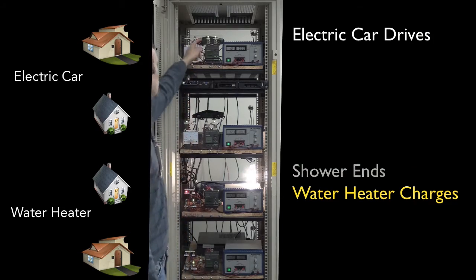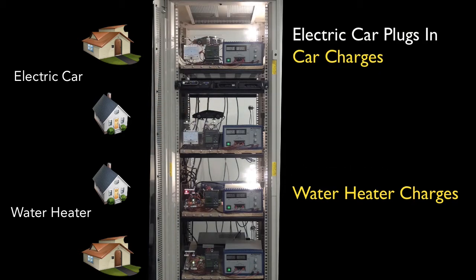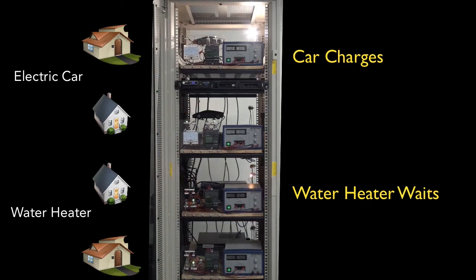Meanwhile, someone in House 1 goes for a drive. When they return home, the car agent broadcasts its needs. When the water heater agent in House 3 gets this message, it begins waiting, since it no longer has priority.